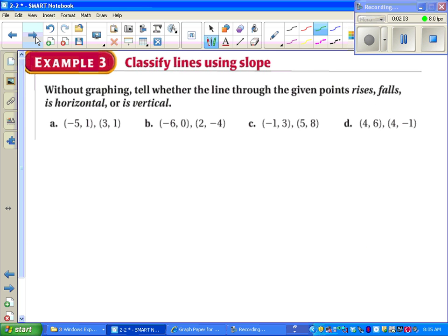This next example tells us to, without graphing, tell whether the line rises (that would mean positive slope), falls (that would be negative slope), horizontal (that would be a zero slope), or vertical (that would be an undefined slope). To figure out any of those, we have to find the slope of each line first.